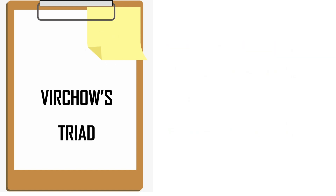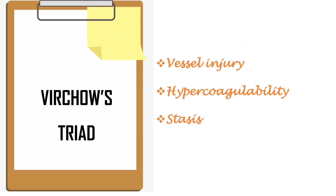Next is Virchow's triad. We studied it in first-year physiology. Ronald Virchow: venous stasis, hypercoagulability, and vessel injury are the three events necessary for venous thrombosis.